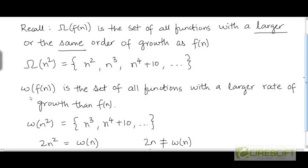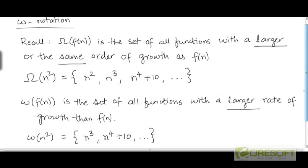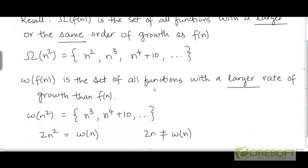So we can think of the functions in big omega of n-square as being of two types: those that have the same rate of growth as n-square, and those that have a larger rate of growth than n-square. Little omega of f is the set of all functions with a decidedly larger rate of growth than f. For example, little omega of n-square is only going to contain functions that have a larger rate of growth than n-square. It's not going to contain functions like n-square, half n-square, two n-square, and so on, because those functions grow at the same rate as n-square. But cubic functions and polynomials with a degree more than two grow at a rate faster than n-square, and so such functions are present in the set little omega of n-square.